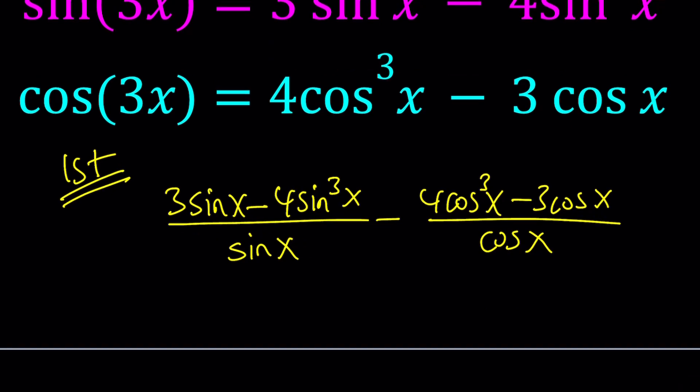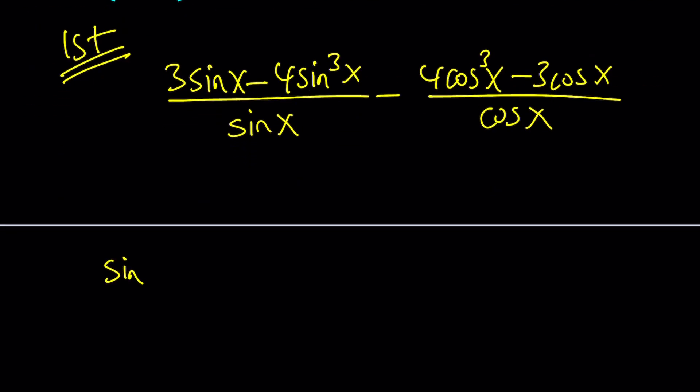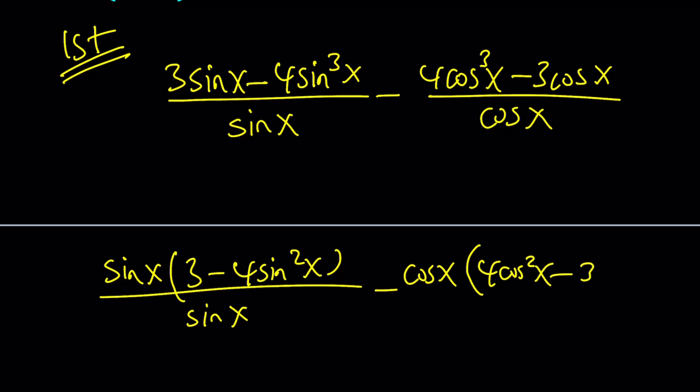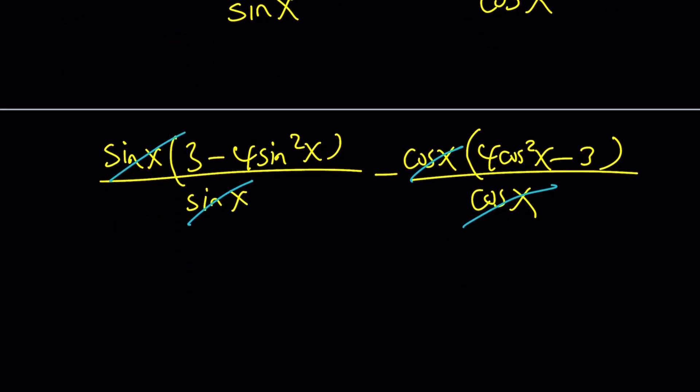Now what we're going to do is, this is our expression, right? So what we're going to do is we're going to simplify this expression and see what that's going to look like. Now, here I can factor out a sine x, obviously, right? That's going to give me 3 minus 4 sine squared x divided by sine x. And then minus cosine x factor out 4 cosine squared x minus 3.